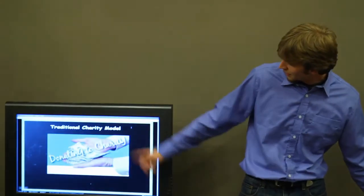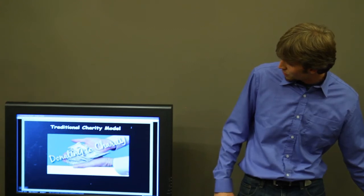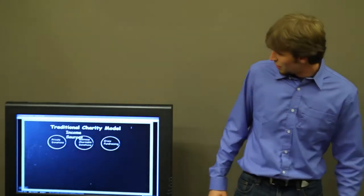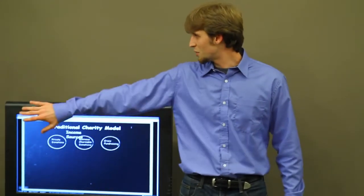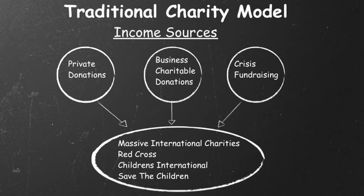Real quick, traditional charity model just to get a little runthrough. You've got these classic ways of doing it: private donations, business charitable donations for write-offs, and what I call crisis fundraising. There's been a horrible famine, give money; there's been this or that, fear, give money. This is a really common way we approach our donations.